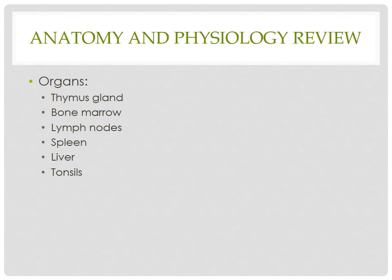The immune system is made up of complex groups of cells and organs that we can find throughout the human body. Primary organs of immunity include bone marrow and the thymus gland. The role of the thymus gland decreases with age. Secondary organs include the liver, tonsils, spleen, lymph nodes, and lymphatic systems.